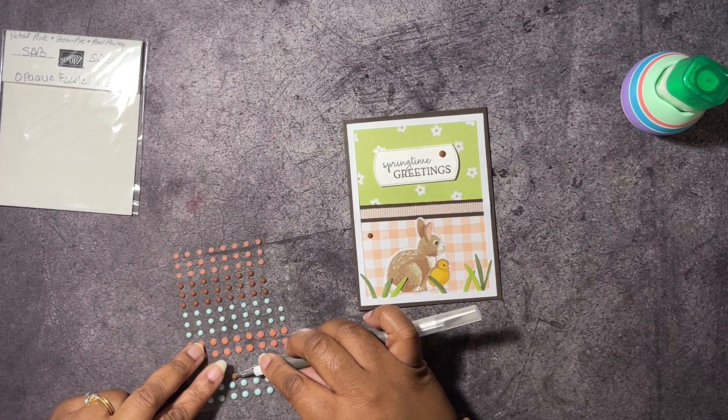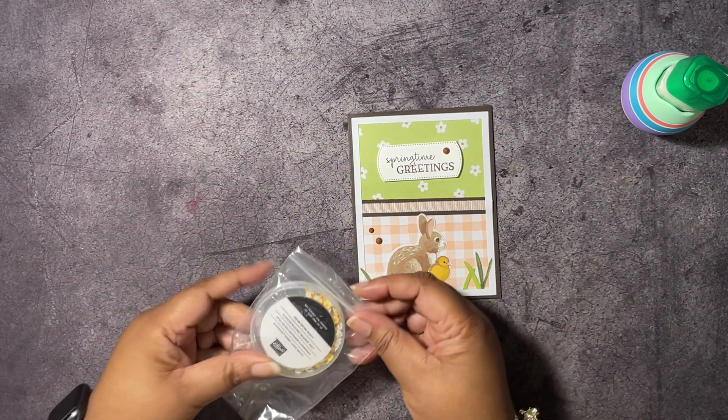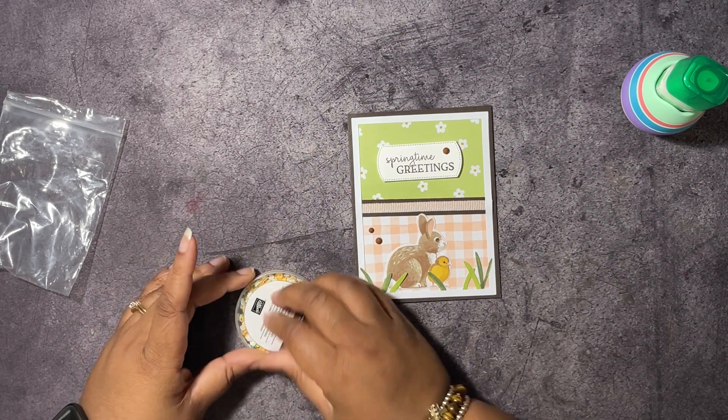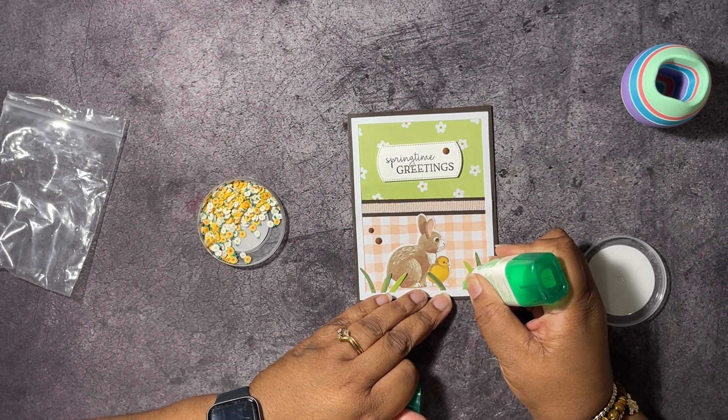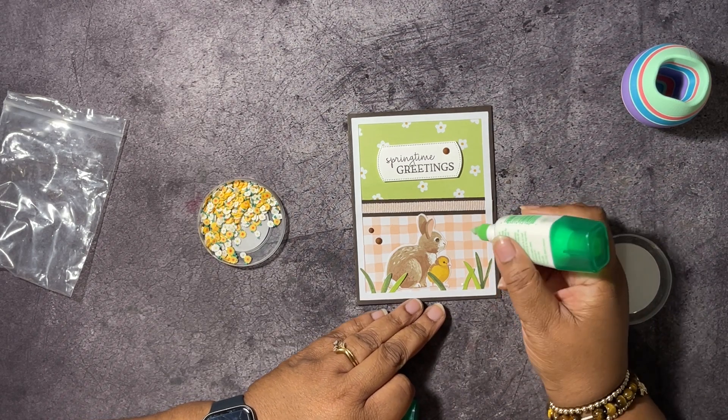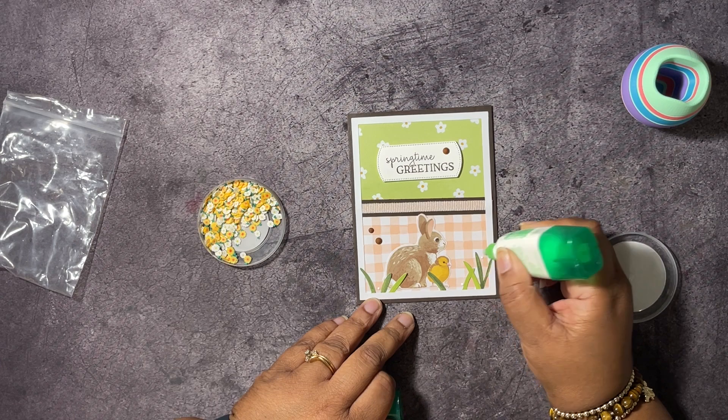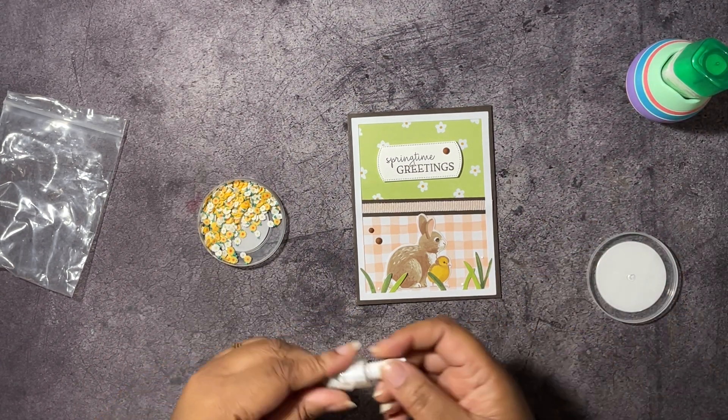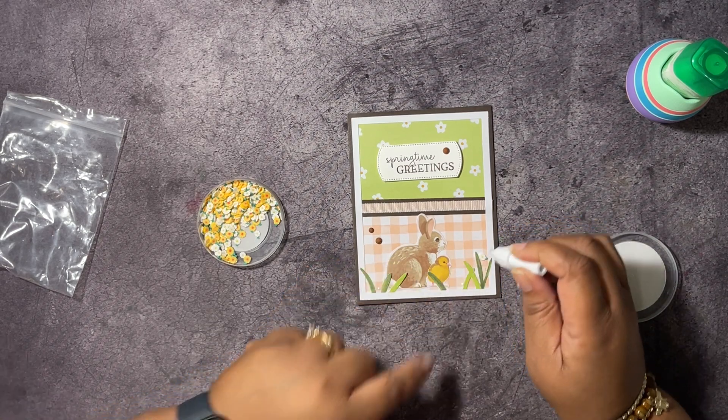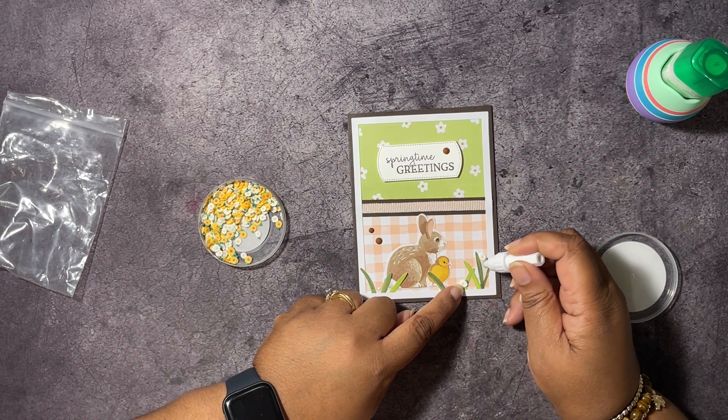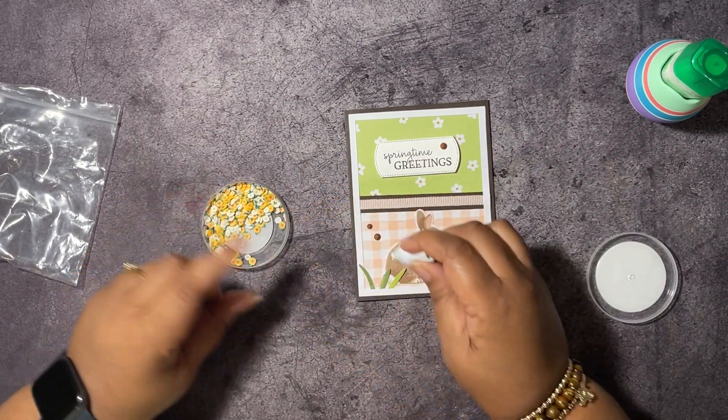Just like that. But I also have the Loose Daisy embellishments and I want to use some of these. Let me put some little dabs of glue on here. I'm gonna get my little putty attachment for my Take Your Pick tool so that I can pick up some of these daisies. I want the white and yellow ones, white with yellow centers. I think I'm gonna use a small one over here.